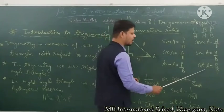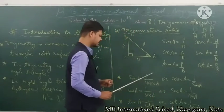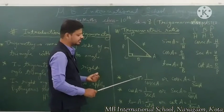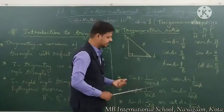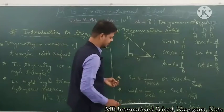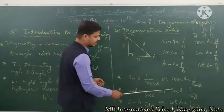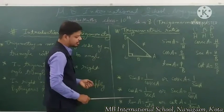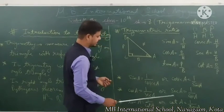Tan A ka inverse is cot A, and cot A ka inverse is tan A. The formulas written below are: sine A is the reciprocal of cosec A, and cosec A is the reciprocal of sine A. Cos A is the reciprocal of sec A, and sec A is the reciprocal of cos A. Tan A is the reciprocal of cot A, and cot A is the reciprocal of tan A.